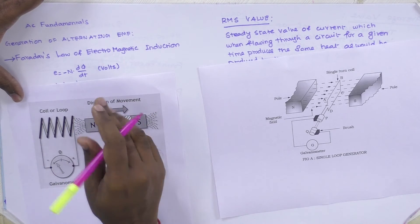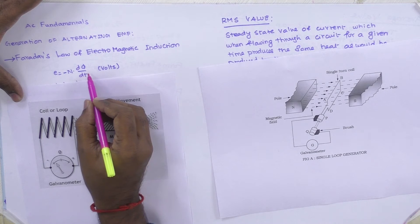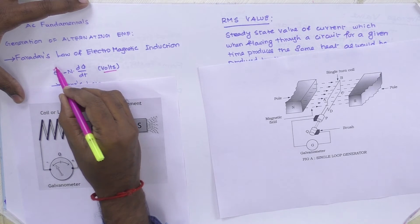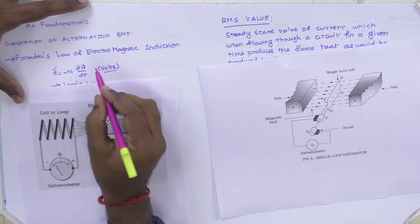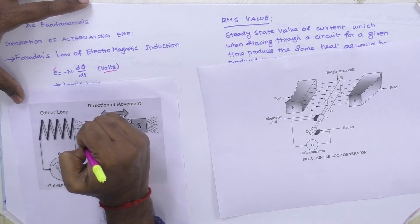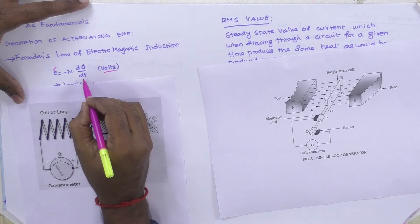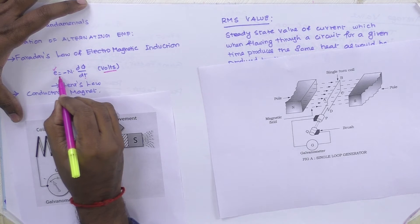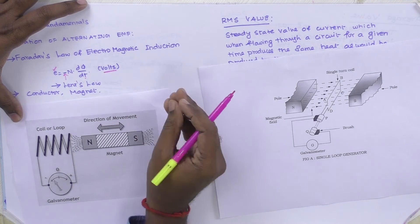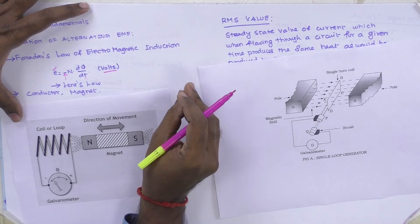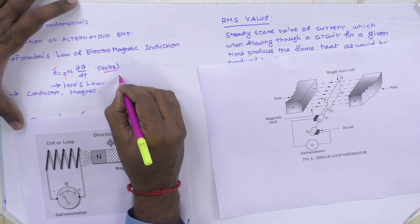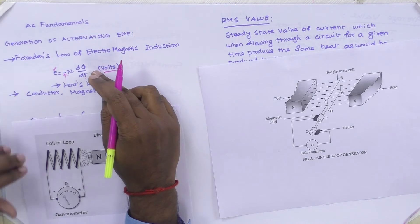This can be represented by the equation: E = −N × dΦ/dt, measured in volts. Here E is the generated EMF, N is the number of coil turns, and dΦ/dt is the rate of change of flux linking with the coil. The negative sign indicates the produced EMF opposes the cause of producing it — this is represented by Lenz's law.